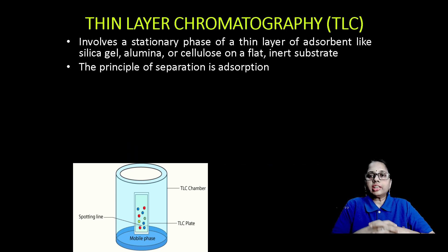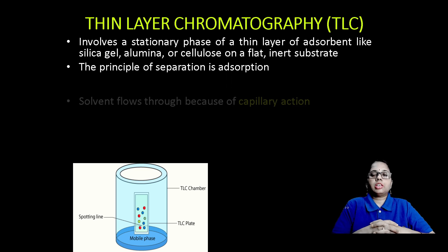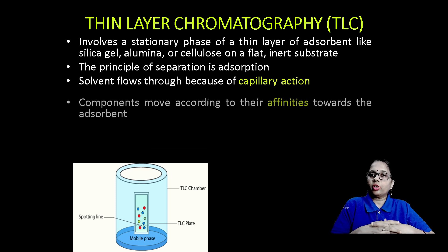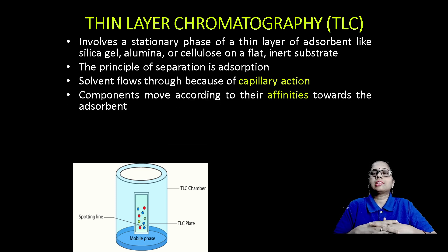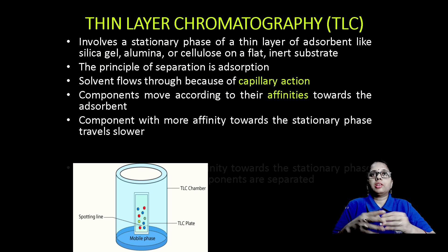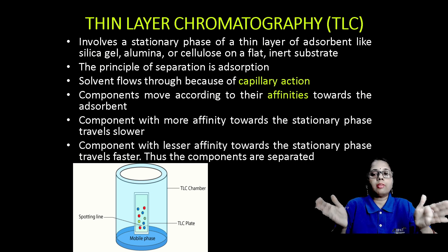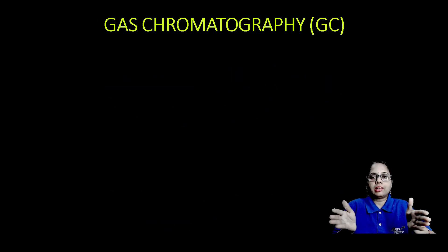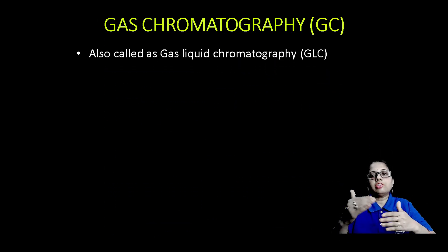Thin layer chromatography involves a stationary phase of a thin layer of adsorbent like silica gel, alumina, or cellulose on a flat inert substrate. The principle here is adsorption. The solvent flows through by capillary action, which is why you observe the retention factor.